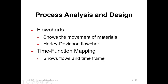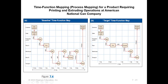The second tool is time function mapping, which shows the flow and time frame — it is a bit more advanced than a flowchart. It also shows movement with a time frame. In a previous flowchart we had just the flow of things, but here we also have time slots. This is also called process mapping. The example given is for printing and extruding operations at American National Company.